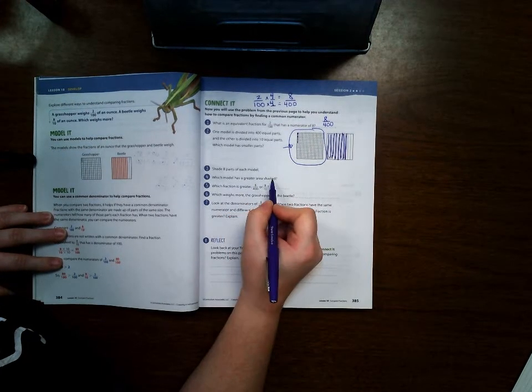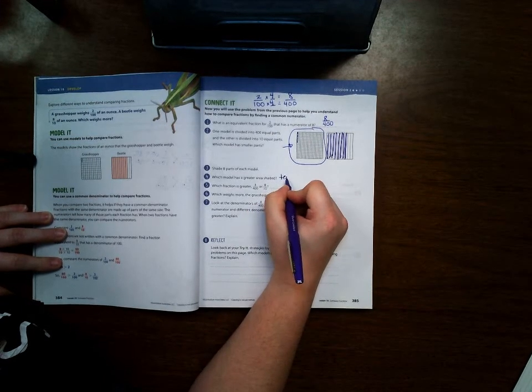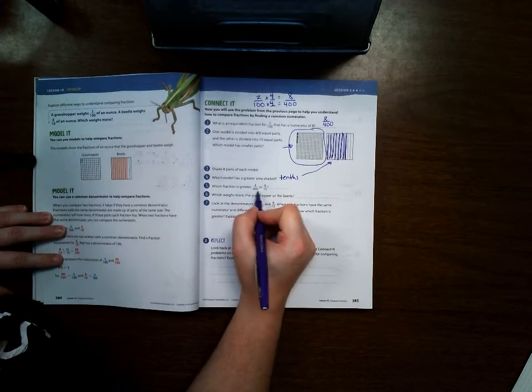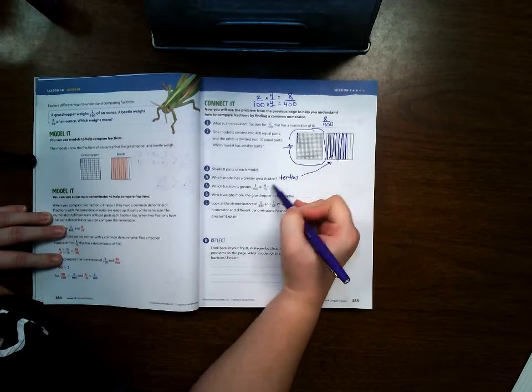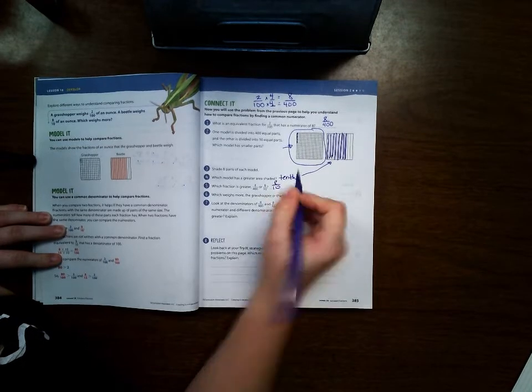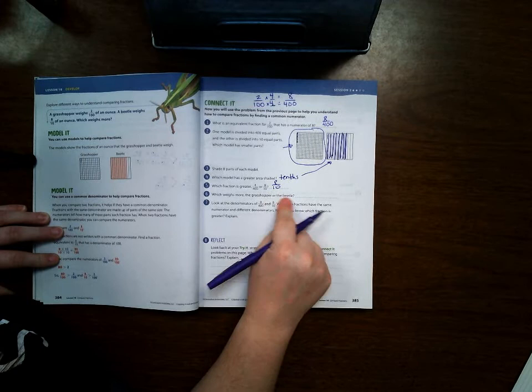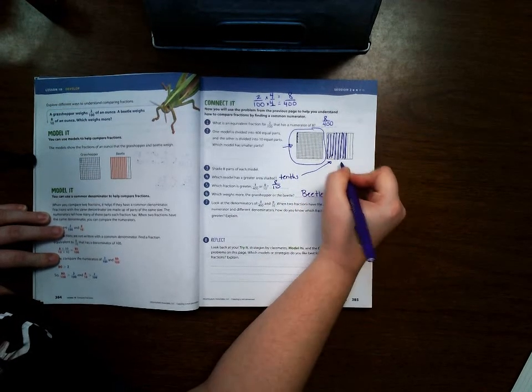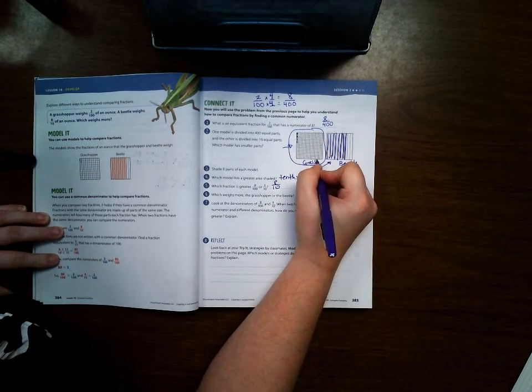Which model has a greater area shaded? The tenths model does. Which fraction is greater, 8/400 which would be this one, or 8/10 which is this one? Well obviously it's 8/10 because it has a lot more shaded. Which weighs more, the grasshopper or the beetle? Well the beetle does because this one was representative of the beetle and this one was representative of the grasshopper.